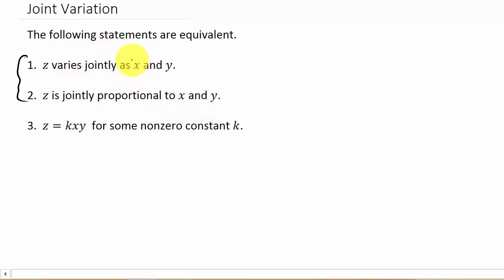Okay, so if this is what they're telling you, then your equation is going to be Z equals some constant K times X times Y. So Z is equal to K times the two variables.